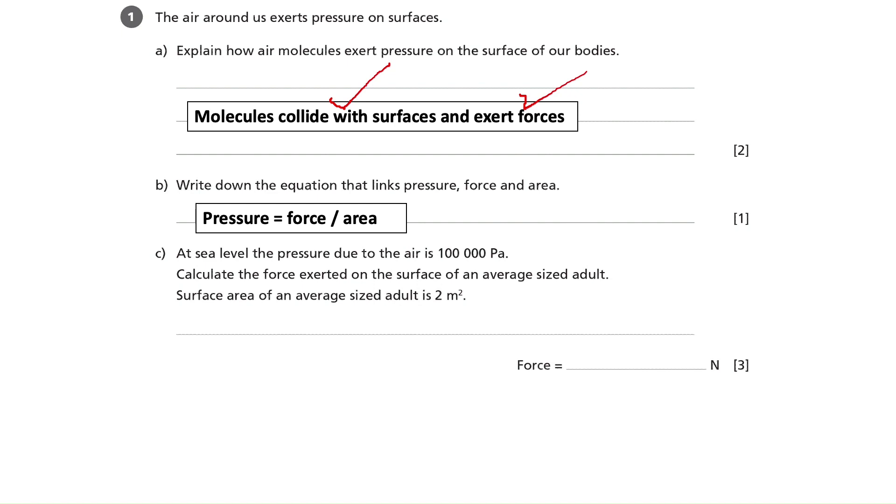Part C. At sea level, the pressure due to the air is 100,000 pascals. Calculate the force exerted on the surface of an average-sized adult. The surface area of an average-sized adult is 2 metres squared.